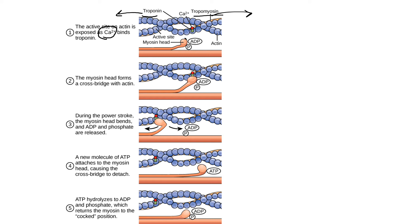These little red projections are the myosin heads that attach to and shift the actin filament. You can see it attaching to the actin and then shifting — it carries the actin filament and shifts it in that direction. Then it can go back to its normal position, attach, and shift again. That can happen depending on how much contraction is occurring and for how long. That's what's happening at the detailed level between the two filaments.